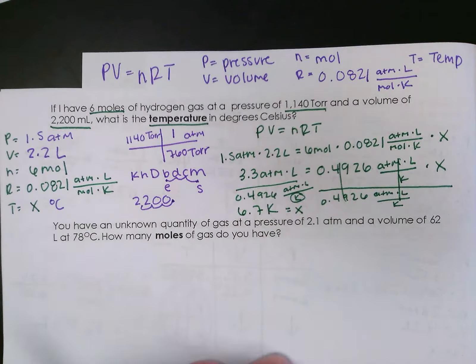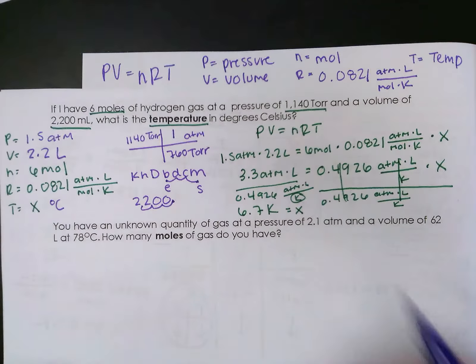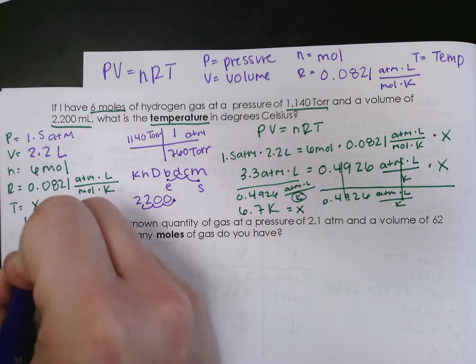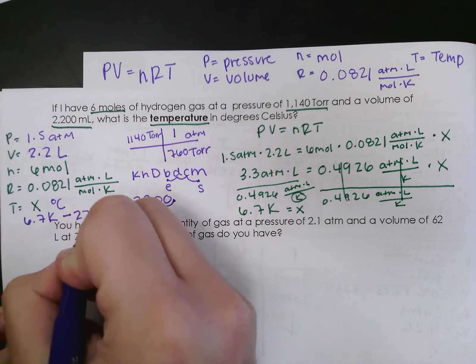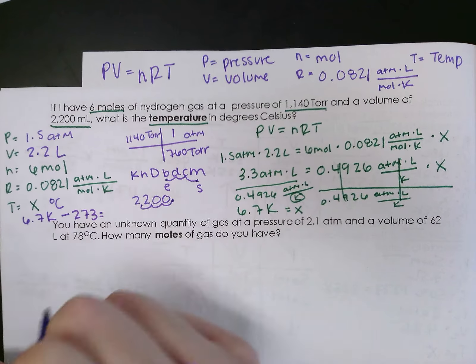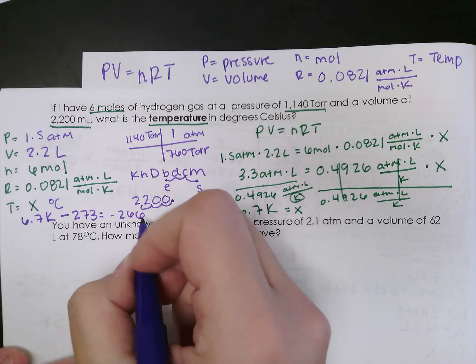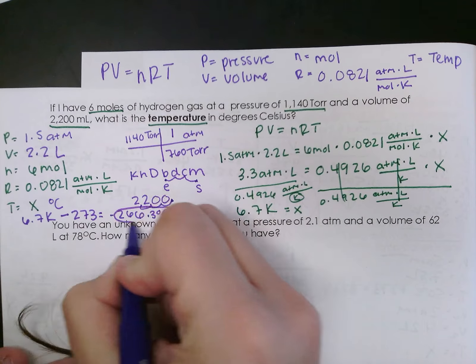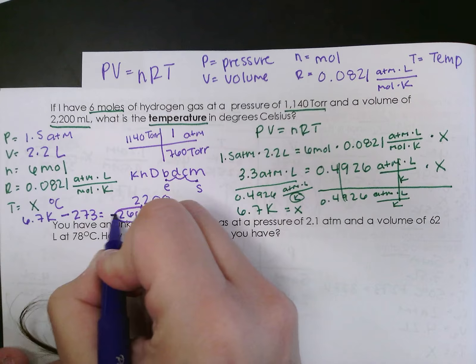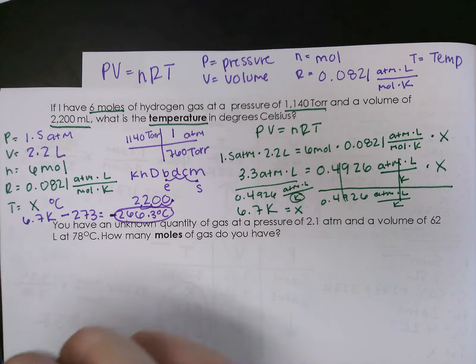But I need my answer in degrees Celsius. So I'm going to have to convert. 6.7 Kelvin. I need it into Celsius, so I'm going to subtract 273. So my final answer is going to be negative 266.3 degrees Celsius.